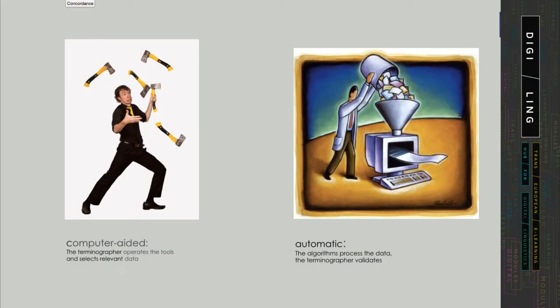The first important distinction to be made is the one between computer-aided methods, where the terminographer or linguist operates the tools and selects relevant data, and automatic term extraction services, where an application or algorithm processes the data which is then offered to the user or fed into another application.